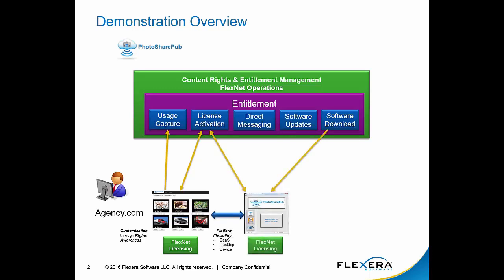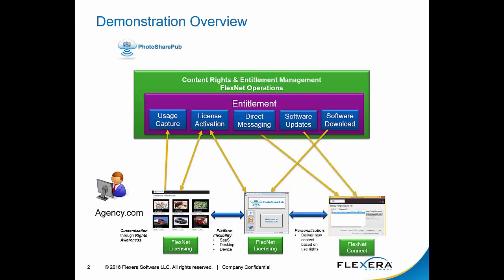Then we'll see how that same licensing technology can be used on an on-premise application. So Agency.com will use the PhotoShare on-premise application, which could be running on a desktop or a mobile device, to view the contents of the albums that they acquire. And finally, the third piece of the producer suite, FlexNet Connect, will enable the content provider to provide direct messaging to those end customers for cases of upsell opportunity — for example, when a new album becomes available. We'll also be able to immediately notify the end customer of updates to the content they're entitled to.